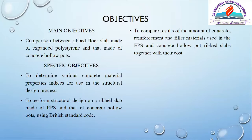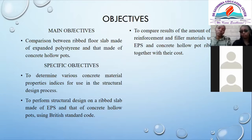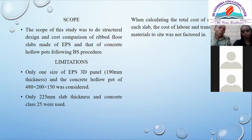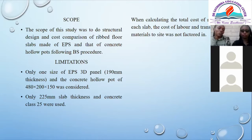The main objective is to compare a ribbed slab made of EPS expanded polystyrene and that made of concrete hollow pots, to determine various key properties for use in structural design. From the structural design, we complete a comparison of slabs made of EPS and those made of concrete hollow pots using British Standard procedure. A limitation was that only one size of EPS 3D panel — 190 mm thickness — and one size of concrete hollow pot — 80 by 250 mm — were considered, with only a 225 mm thick slab. The cost of labor and transport were not factored in.